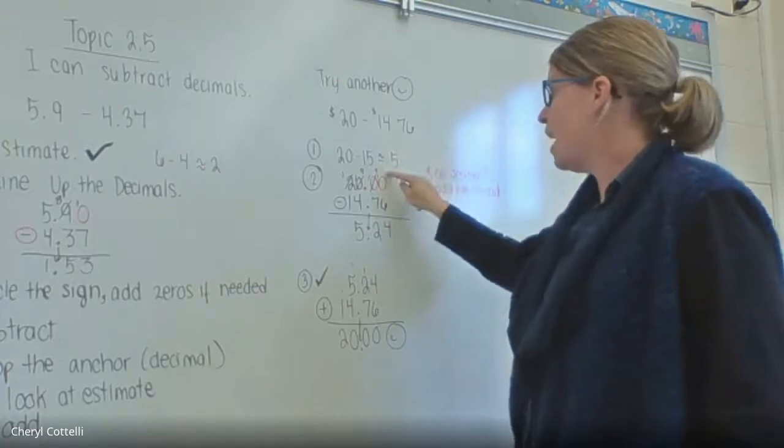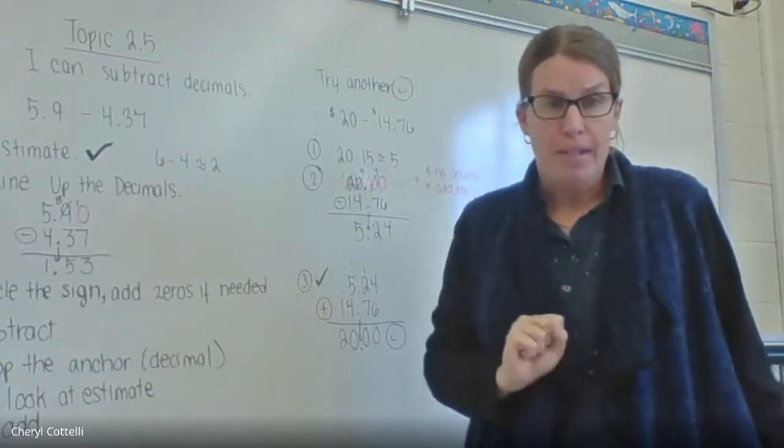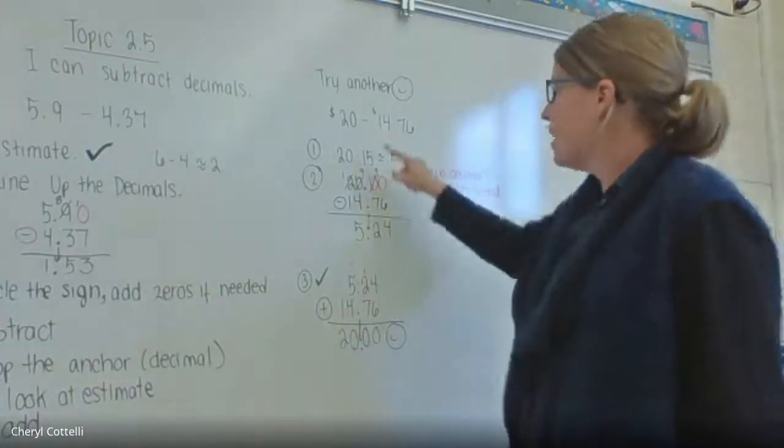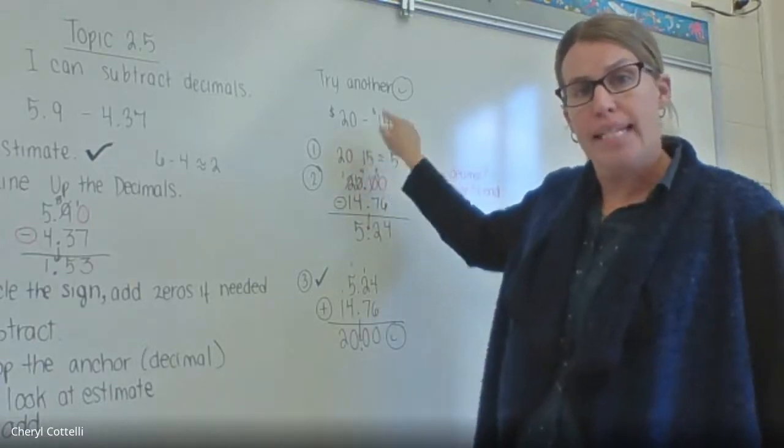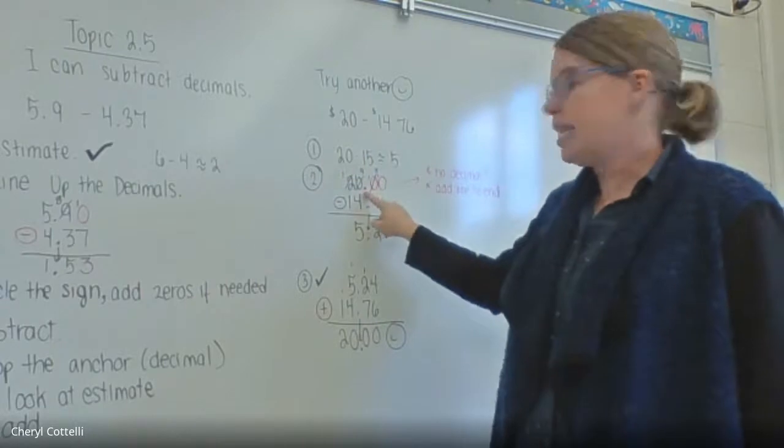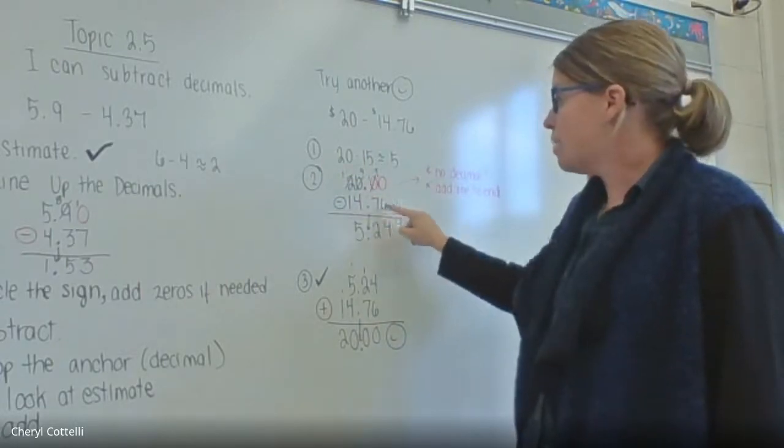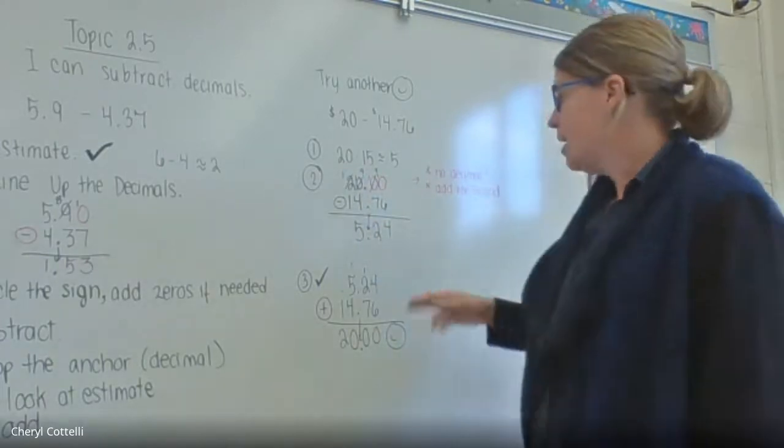Twenty minus fifteen is about 5, so if we do this right we should get an answer of around 5. Now, the twenty dollars doesn't have a decimal. If you don't see it, it means it's at the end. So all you have to do is add a decimal at the end and then line up the decimals. I've got to add two zeros to make them line up.